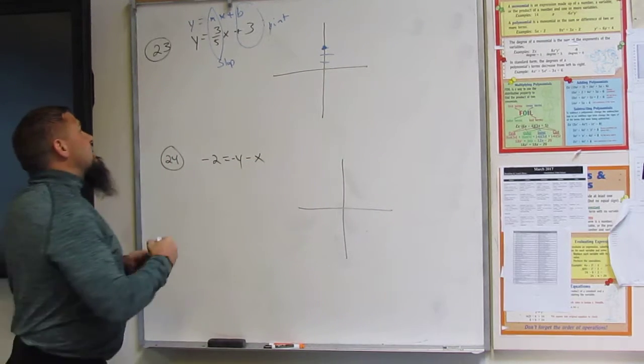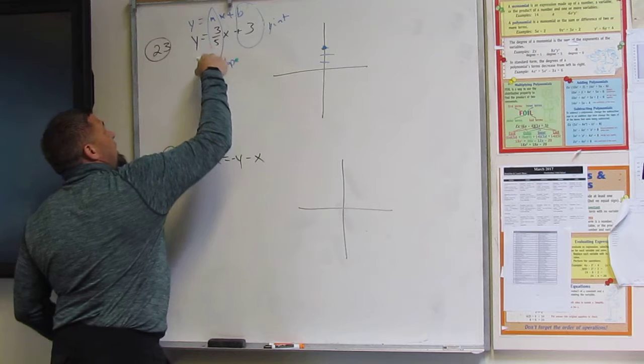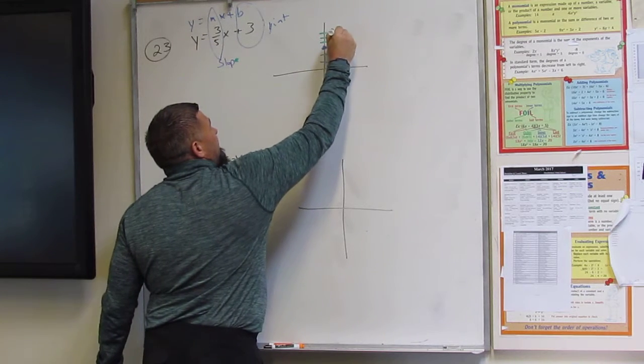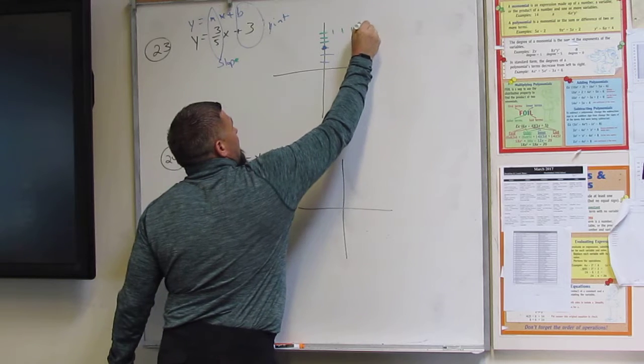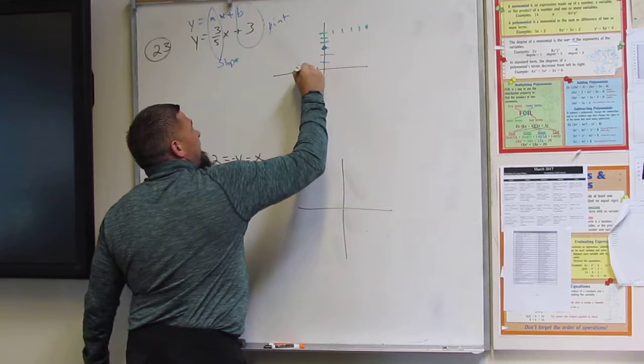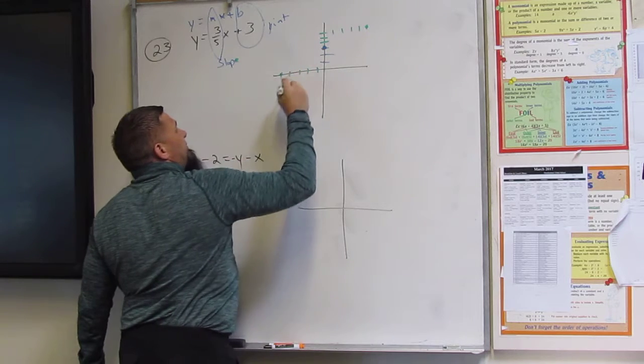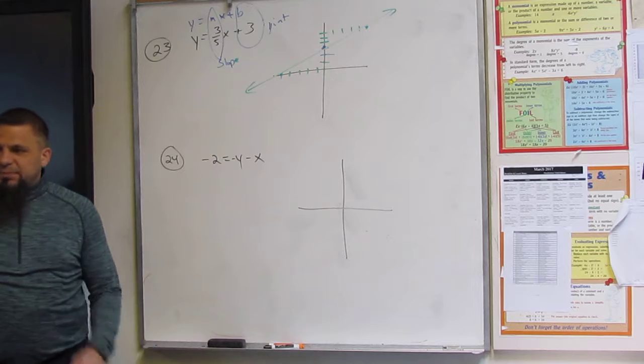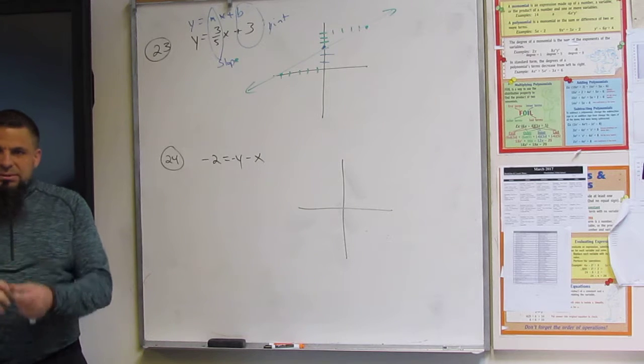Then I go with my slope. My slope is rise three, run five. Or go down three and left five. Either way, I have my line. It's simple.